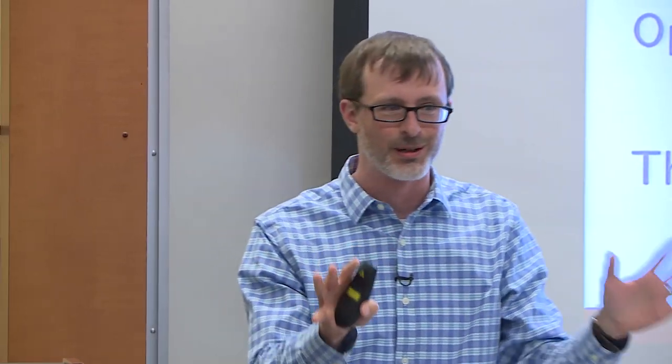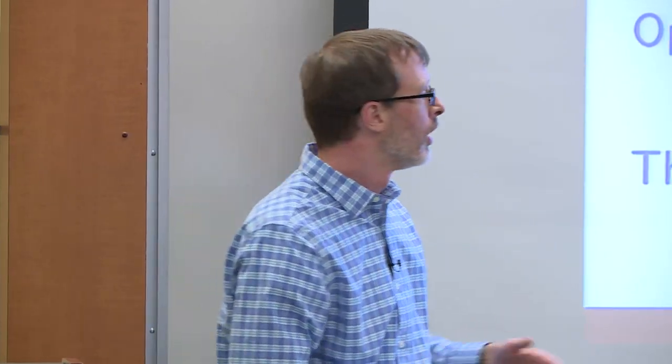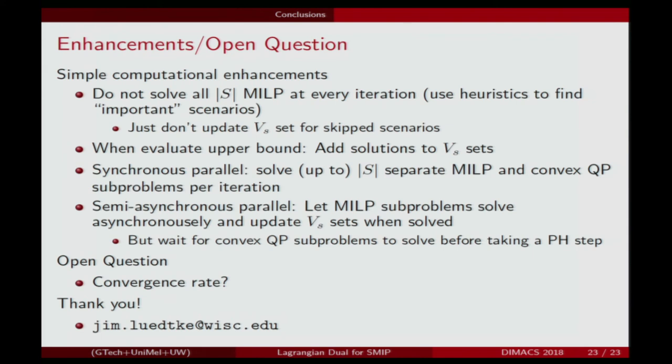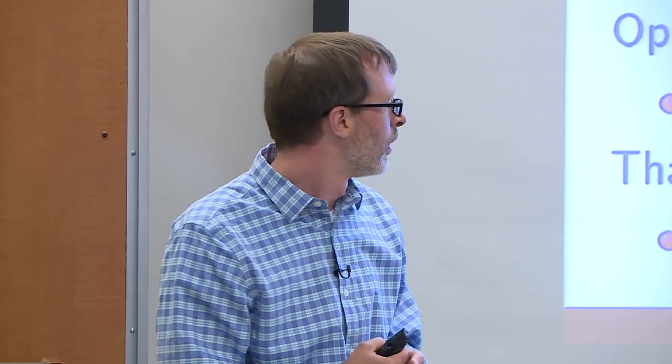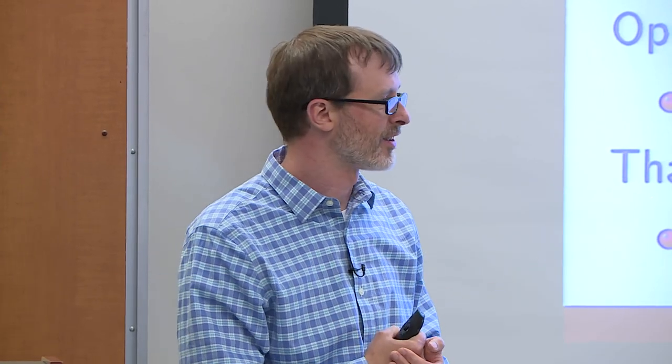I'll close with an open question, and maybe some people in the audience are better placed to analyze this than me. Our convergence analysis is somewhat unsatisfactory: in the worst case, you have to enumerate all extreme points of the convex hull before convergence kicks in. It would be really nice to understand if there's a true convergence rate — whether this thing converges from some starting point at a classical rate. Thank you.